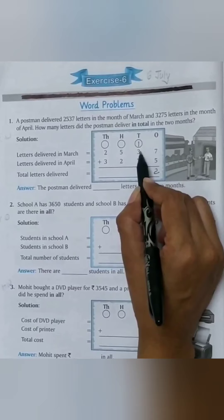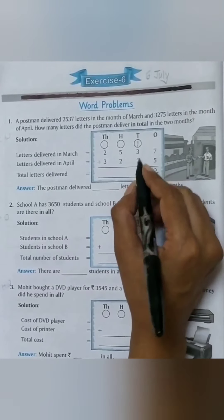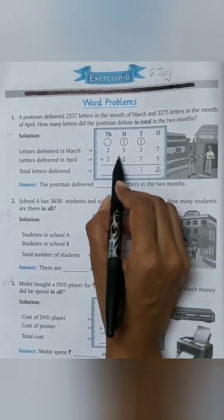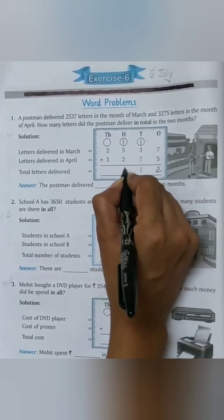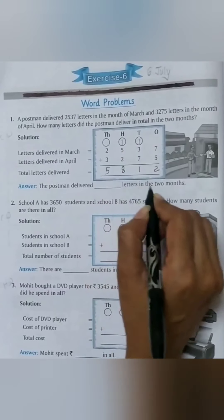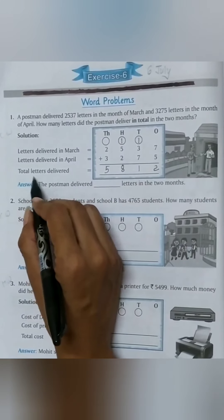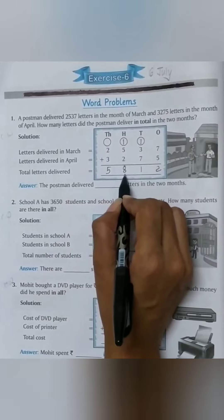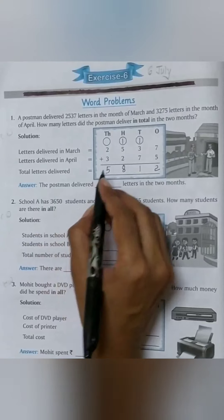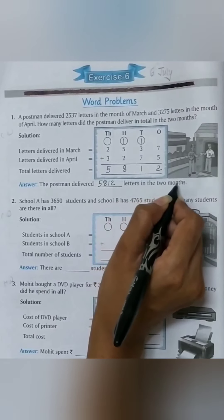1 plus 3 equals 4, 4 plus 7 equals 11. Write down 1, carry 1. 1 plus 5 equals 6, 6 plus 2 equals 8. Next place: 2 plus 3 equals 5. Total answer is 5812. The postman delivered 5812 letters in the two months.